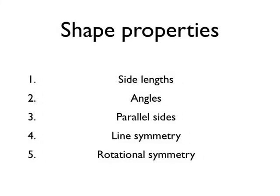We're going to look at five different shape properties for each of the triangles: the side lengths, the angles, the parallel sides, the line symmetry, and the rotational symmetry of each of the triangles.